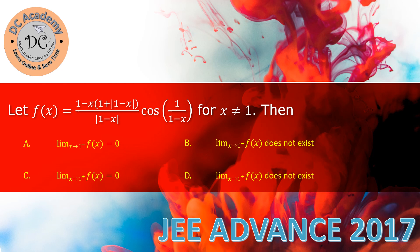In this video we will solve a particular problem which appeared in the 2017 JEE Advanced paper. We need to find the right limit and left limit at the point x equal to 1, and check whether they are 0 or exist. So first we have to analyze the function and calculate the left limit and right limit at x equal to 1.